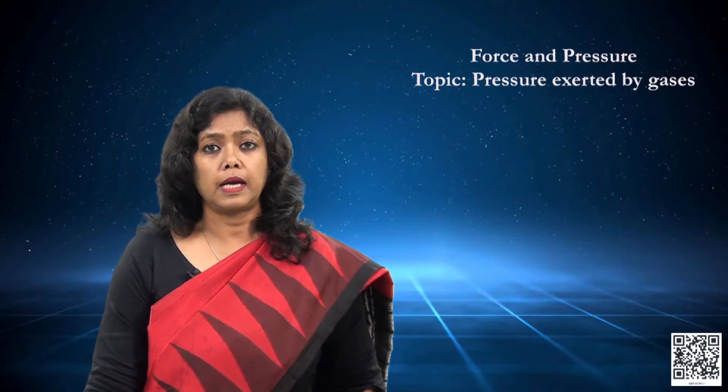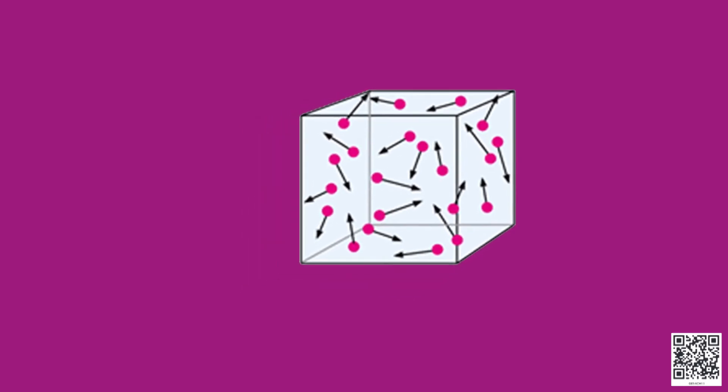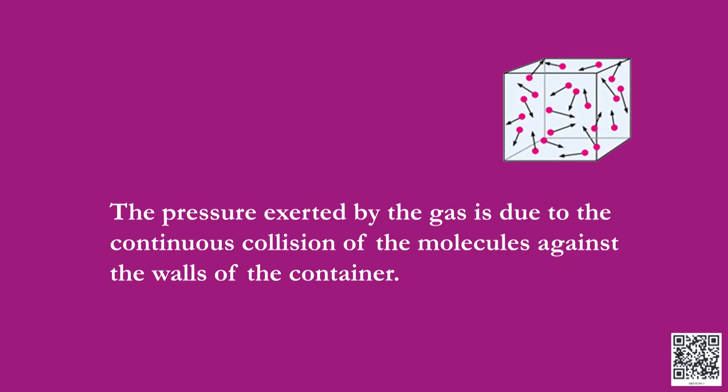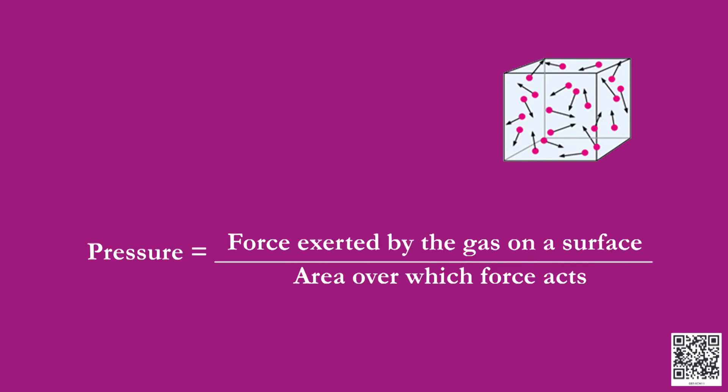But how do gases exert pressure? Look at this diagram. Gases have molecules in them. The molecules of a gas are in a state of constant random motion; they continuously collide against the wall of the container. The pressure exerted by the gas is due to the continuous collision of the molecules against the walls of the container. Just like we calculate pressure exerted by liquid, we can also calculate the pressure exerted by gases in the same way.